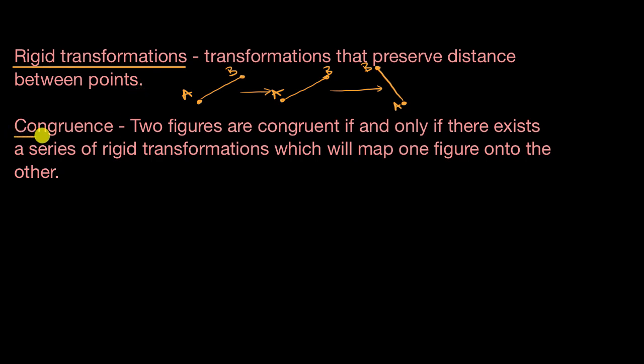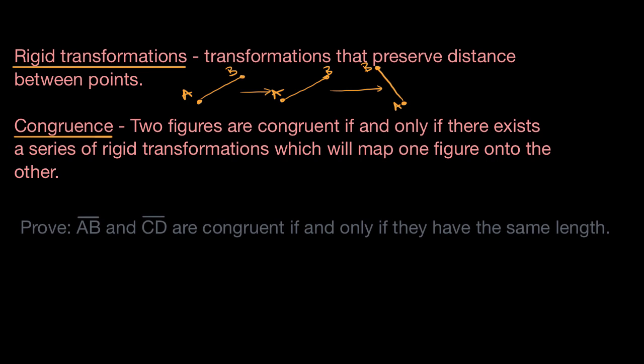Now another idea is congruence. And in the context of this video, we're going to be viewing the definition of congruence as two figures are congruent if and only if there exists a series of rigid transformations which will map one figure onto the other. You might see other definitions of congruence in your life, but this is the rigid transformation definition of congruence that we will use. And we're going to use these two definitions to prove the following: to prove that saying two segments are congruent is equivalent to saying that they have the same length.